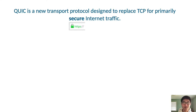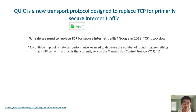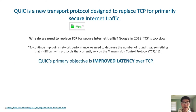QUIC is a new transfer protocol designed to replace TCP for primarily secure internet traffic — and secure here means HTTPS traffic. So why do we need to replace TCP for secure internet traffic? TCP has been working well for decades at this point. Well, in 2013 Google stated that TCP was simply too slow for them. In particular, they stated that they wanted to decrease the number of round trips necessary in a web request, something that is difficult with TCP because TCP is implemented in the kernel. Therefore, QUIC's primary objective is improved latency over TCP.